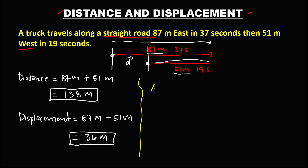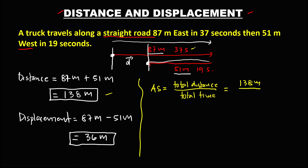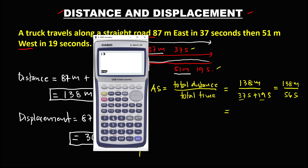To find the average speed, the average speed equals the total distance over the total time. The total distance is 138 meters, and the total time is 37 seconds plus 19 seconds, which equals 56 seconds. So we have 138 meters over 56 seconds.